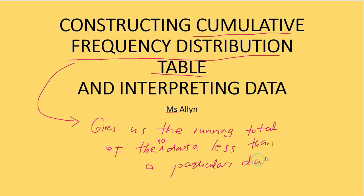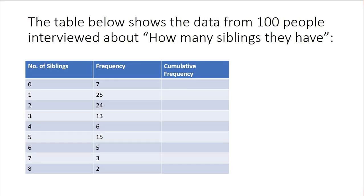Let's now look at some examples. Let's start with the first table here. The table below shows the data from 100 people interviewed about how many siblings they have in their family. So this is how we do the cumulative frequency table. First, you start off with the first given frequency. So these are the number of siblings that they have and the frequency. Meaning to say, there are 7 people with no siblings, 25 people with 1 sibling. So let's now check what is the cumulative frequency. First is you have to make sure that you have another column for the cumulative frequency table.